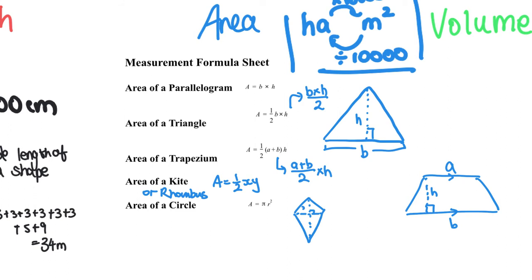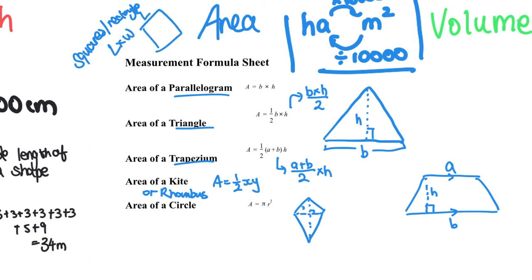Here are the common areas you're going to need in your Year 8 measurement test: parallelograms, triangles, trapeziums, kites, rhombuses, and circles. Don't forget that squares and rectangles are simply length times width. Something important to remember is when looking at the heights of these shapes, we're looking for the perpendicular height — a height at a 90-degree angle. No sloped sides. We're looking for the height perpendicular to the base, at a 90-degree angle. The same applies for your kite — you're looking for those 90-degree diagonals.